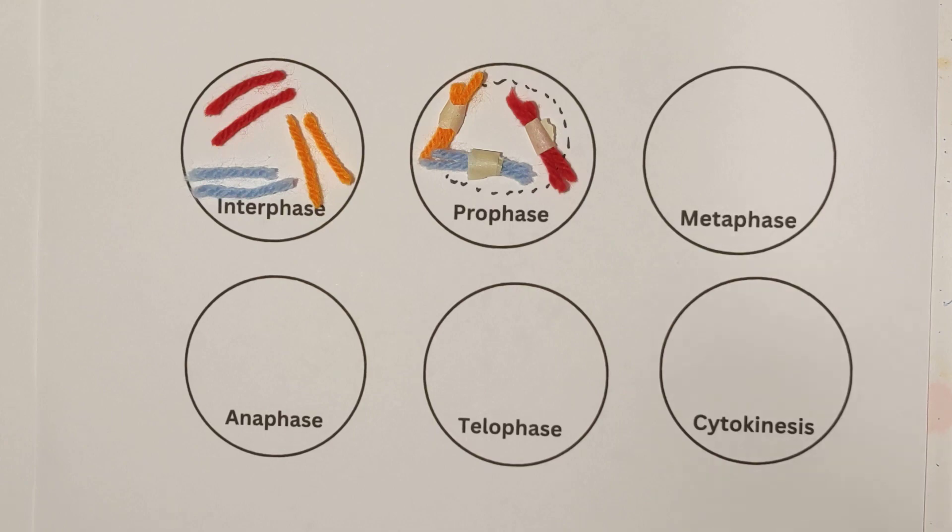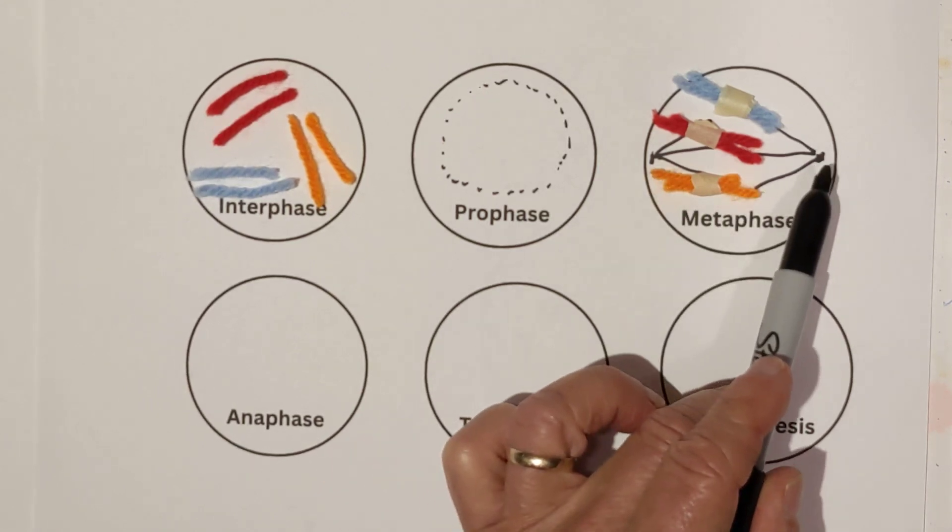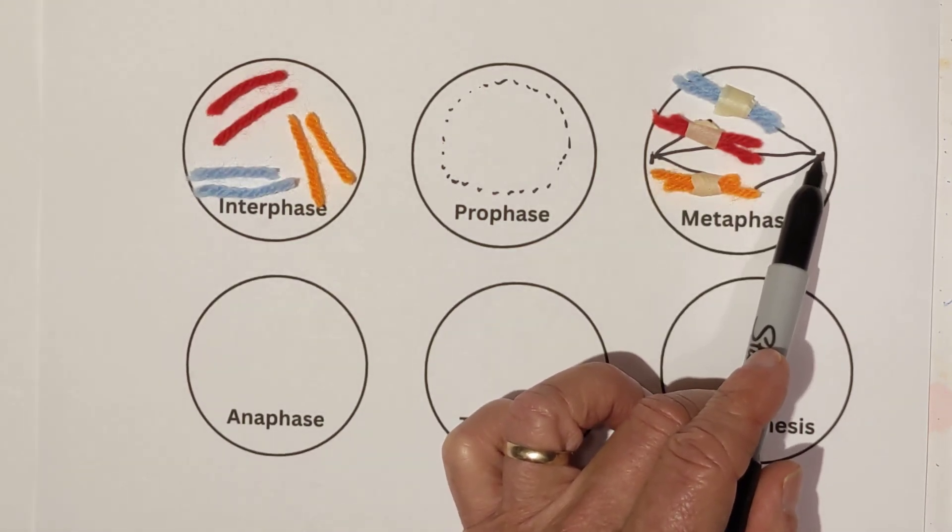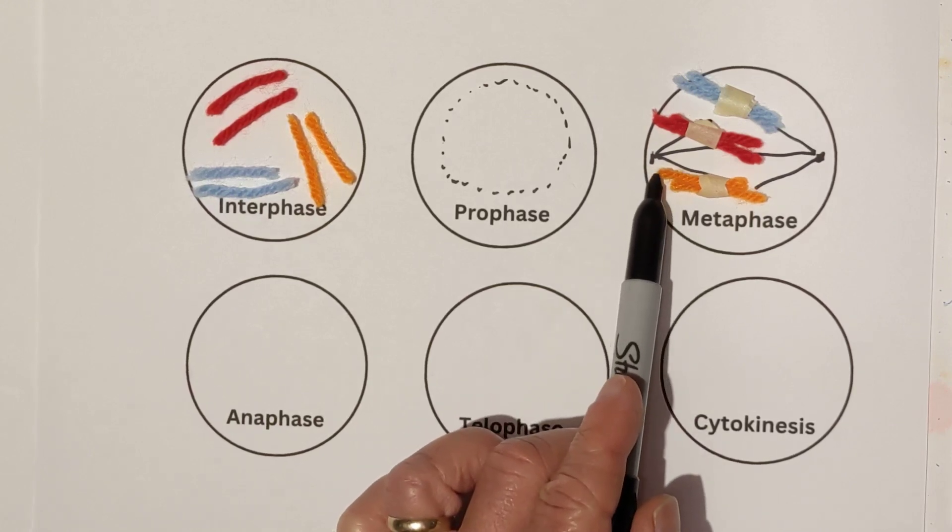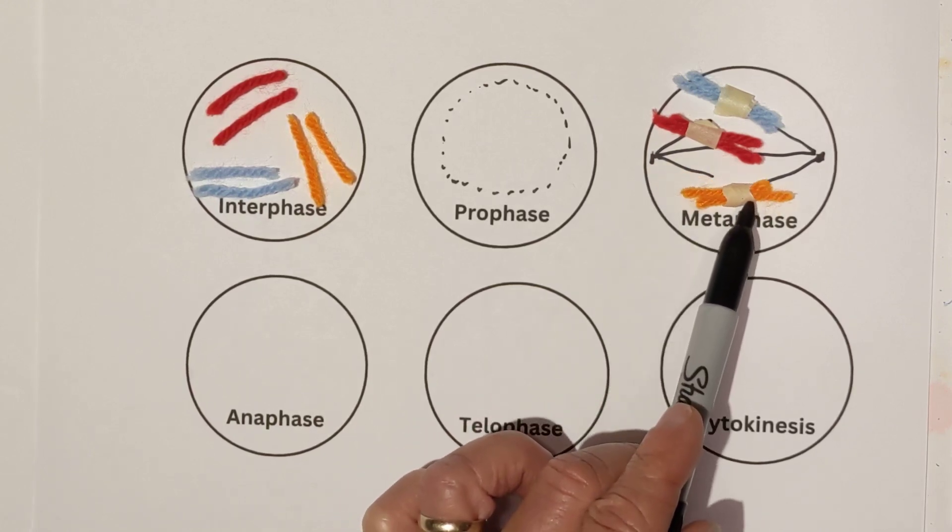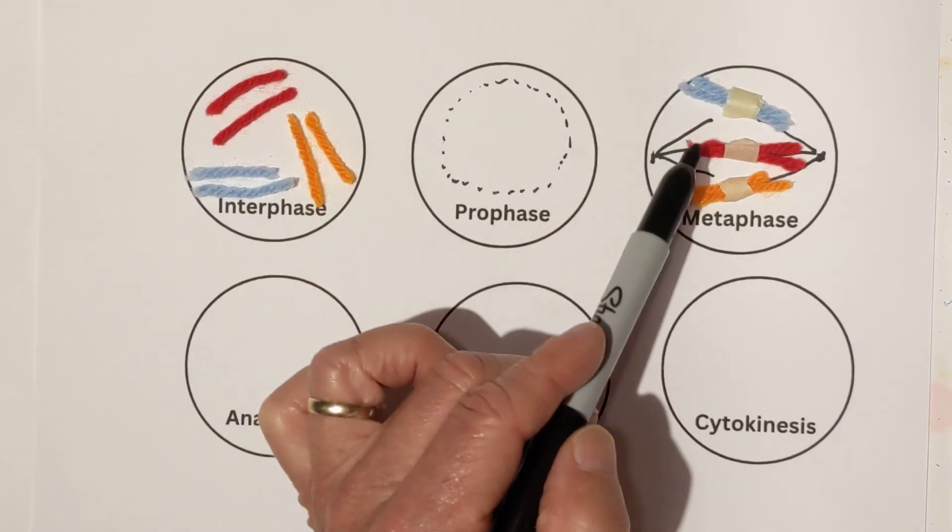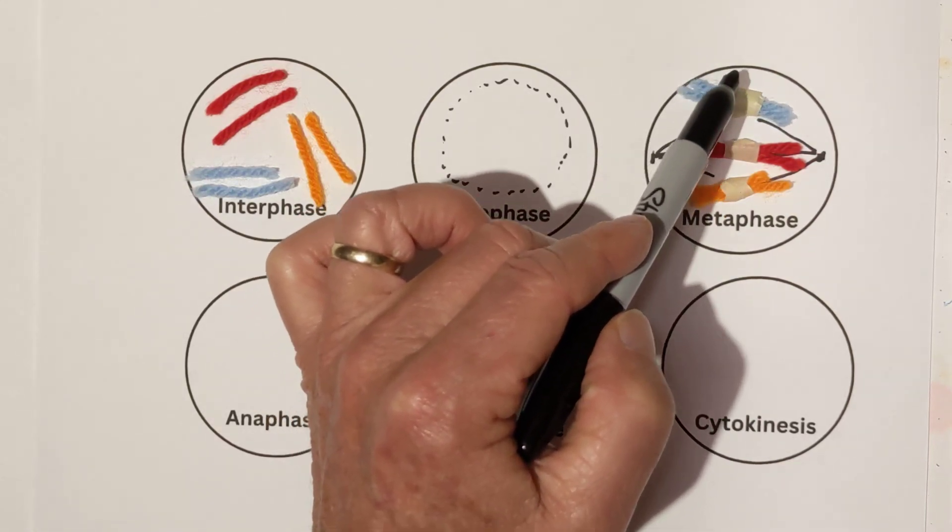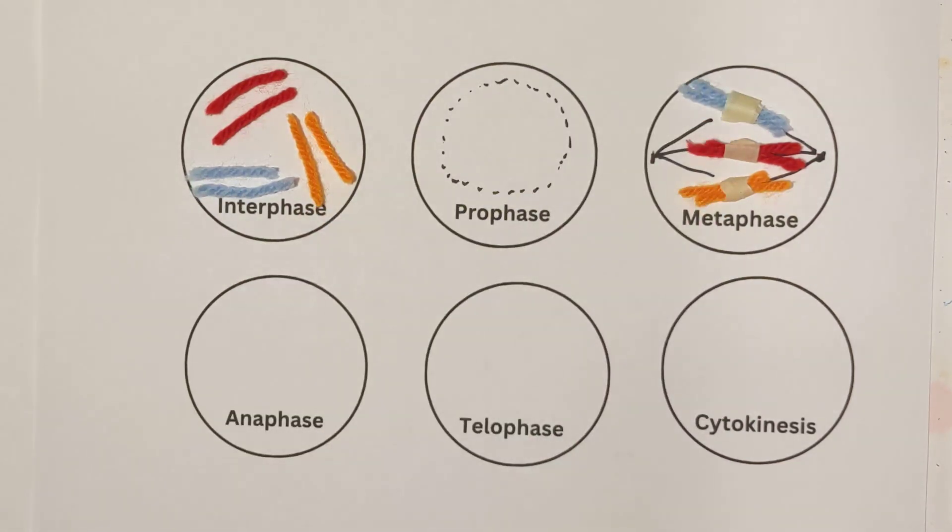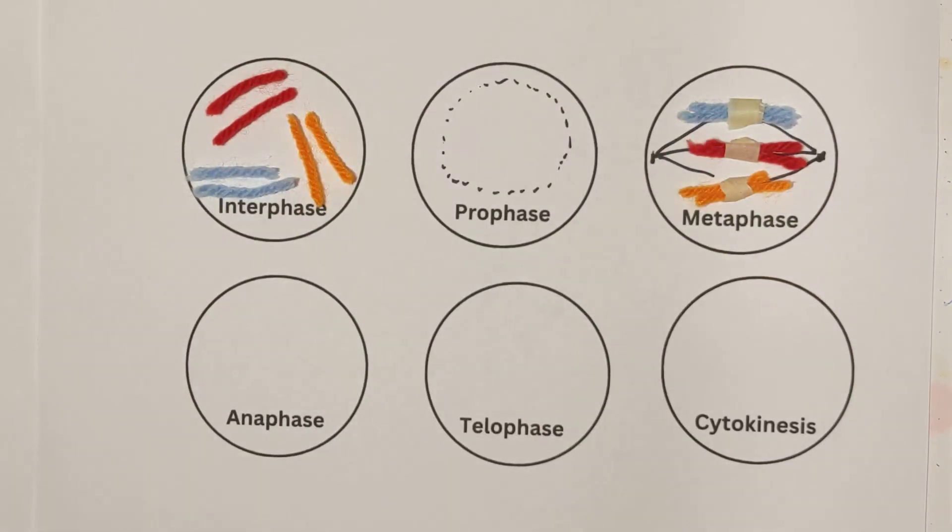Now we're ready for metaphase. Now, during metaphase, meta for middle, these spindle fibers, which are attached to the centrioles, tug and pull on the chromosomes and pull them into the middle. They're tugging. These spindle fibers are tugging. These spindle fibers are tugging. And they line them up all right in the middle. Middle for metaphase.